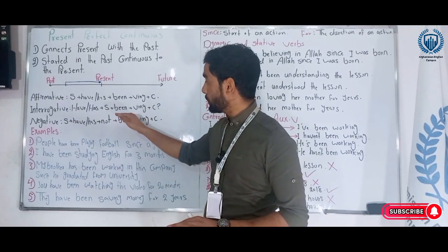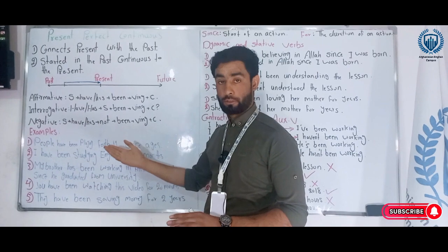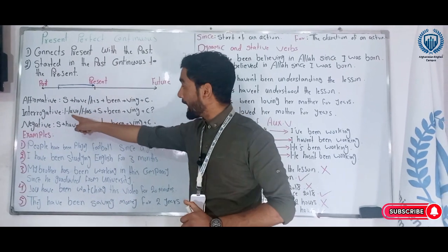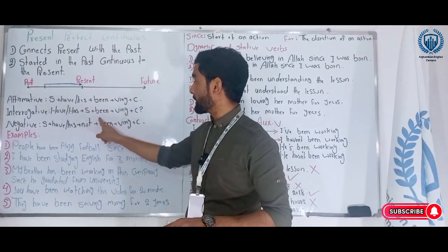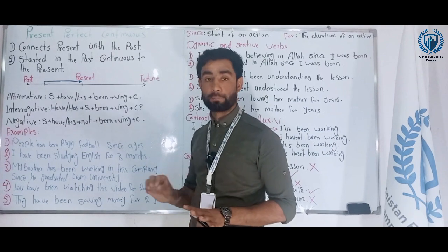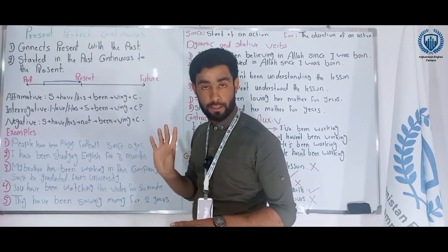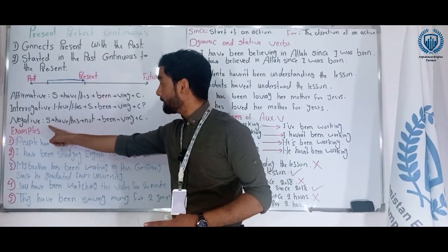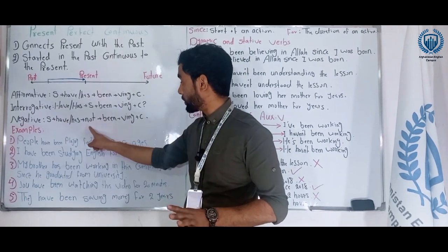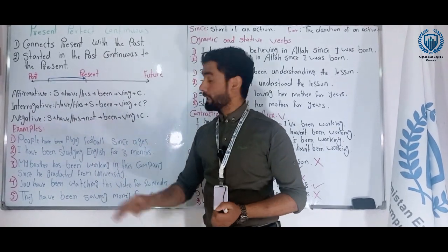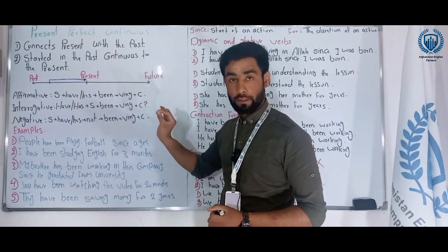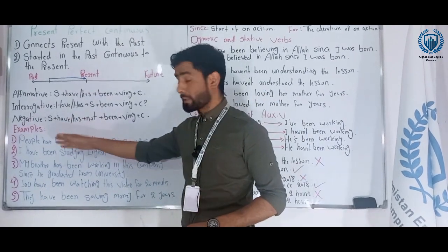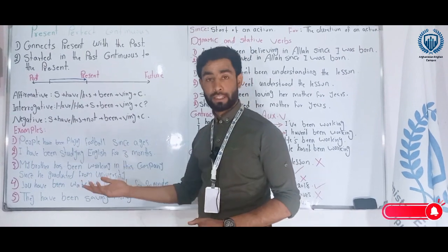To change to interrogative form, we bring the auxiliary 'have' or 'has' to the beginning: Have/Has + subject + been + verb-ing + complement. For the negative form, the structure is: Subject + have/has + not + been + verb-ing + complement. These are the three forms of present perfect continuous tense: affirmative, interrogative, and negative.